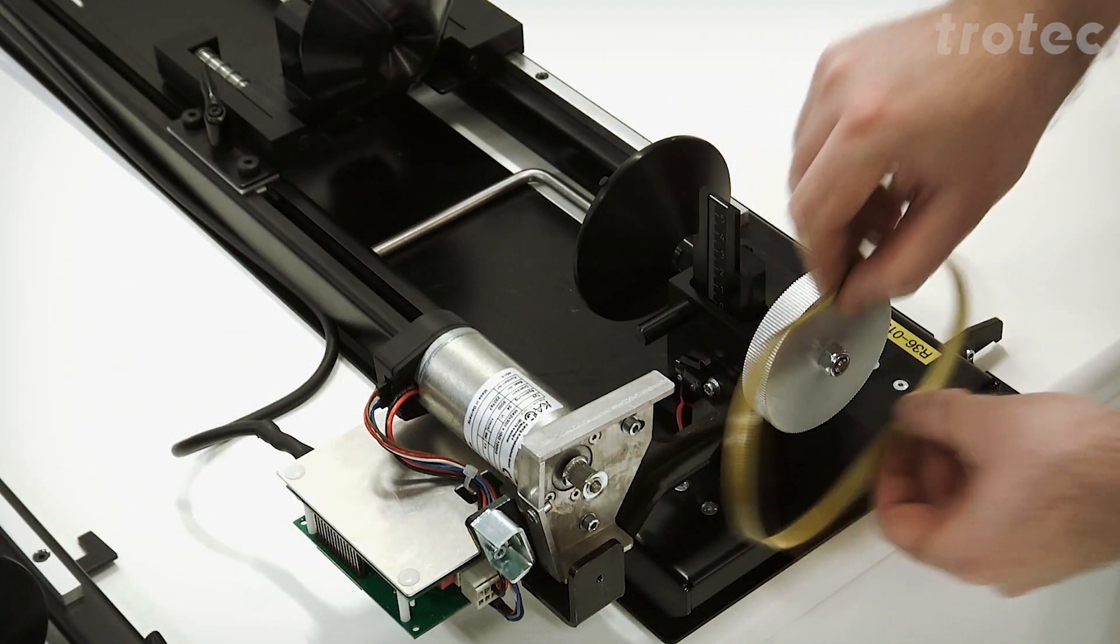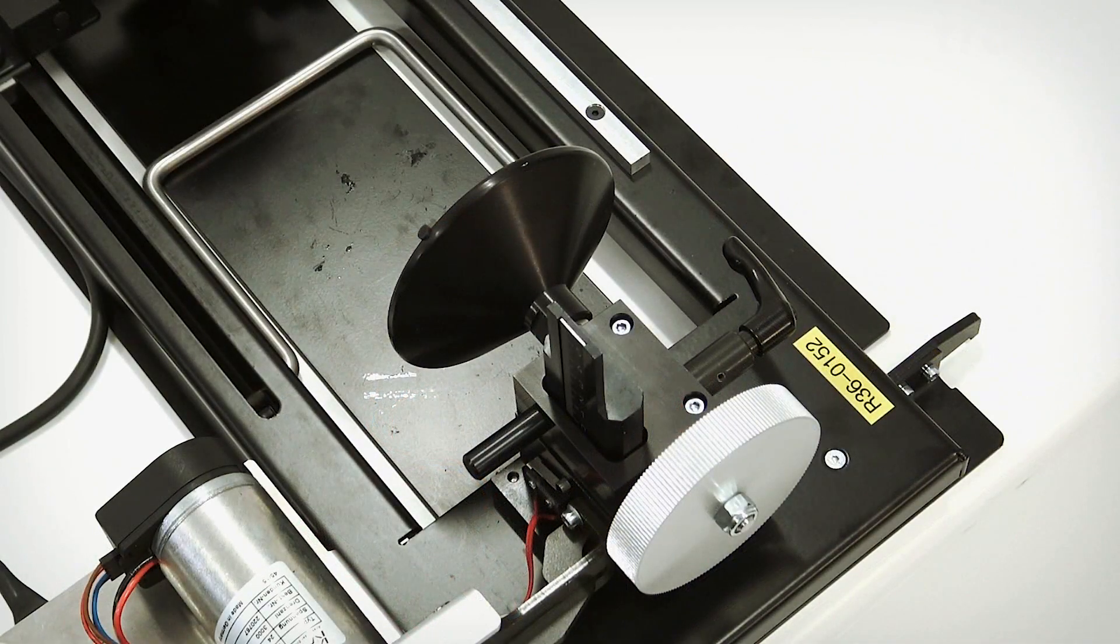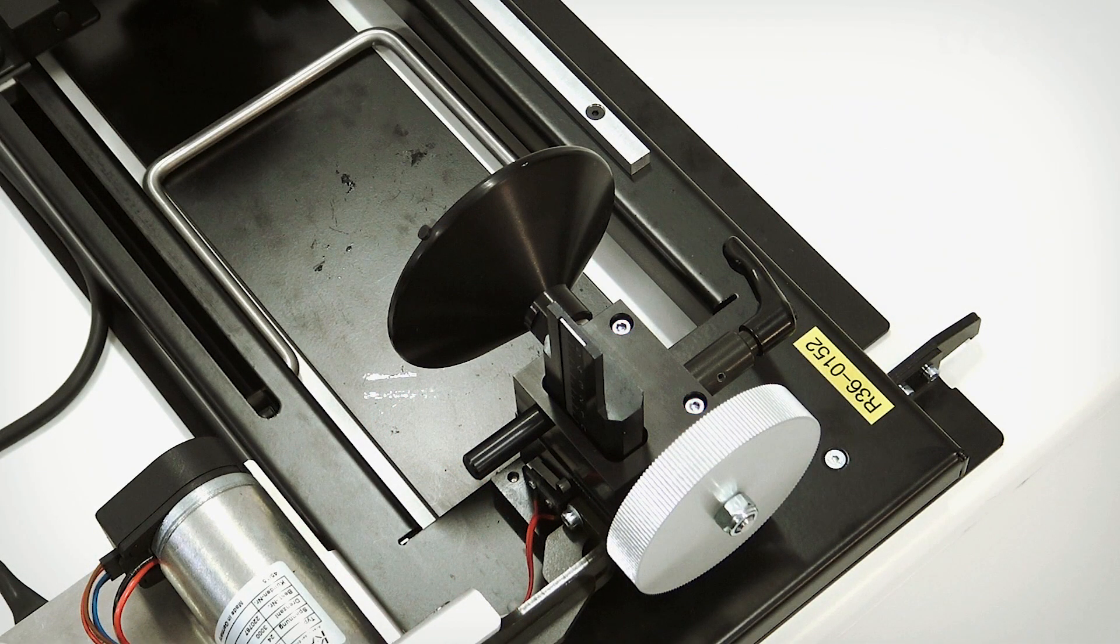To mount the roller mechanism, we first need to remove the belt and then these two screws here and lift up the cone.